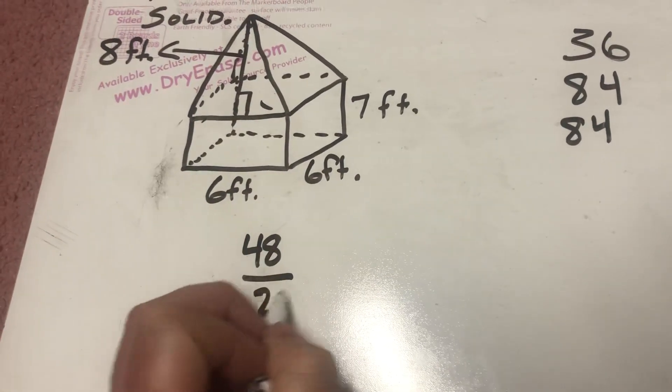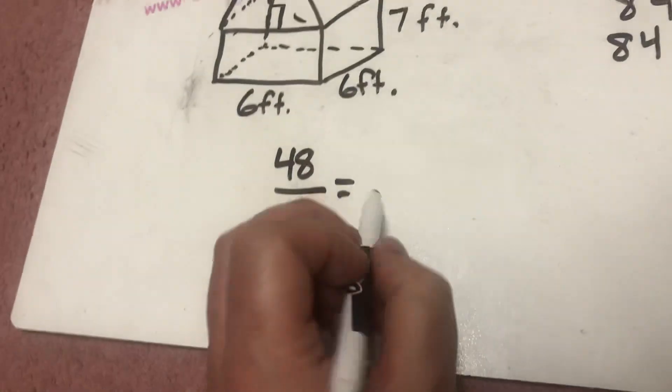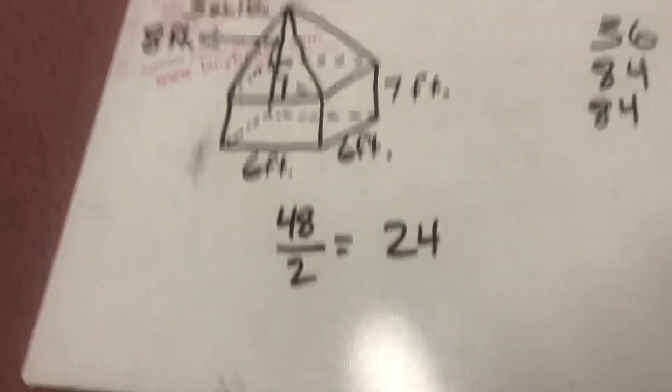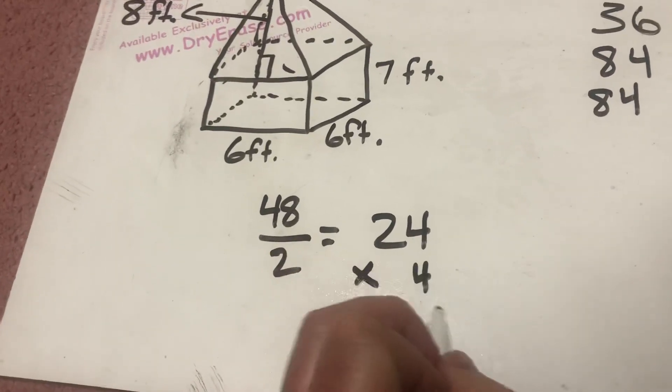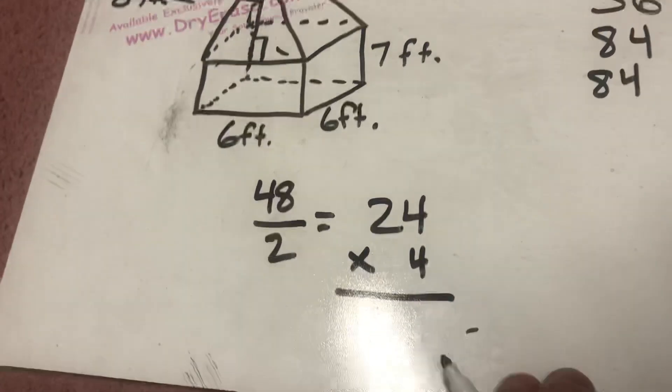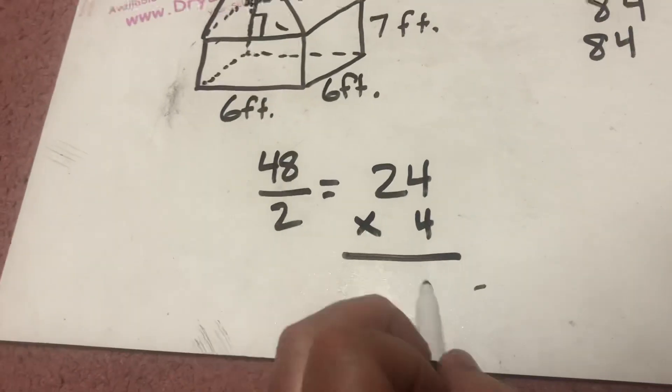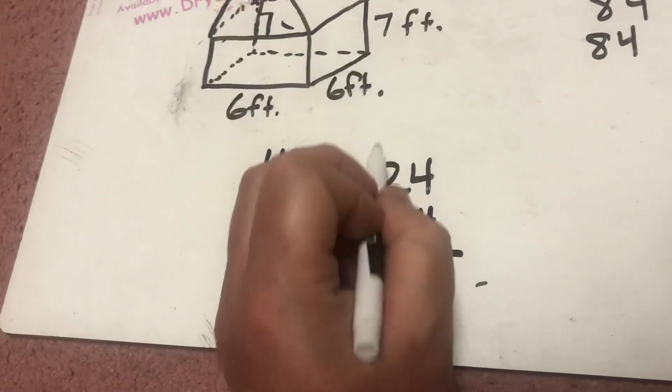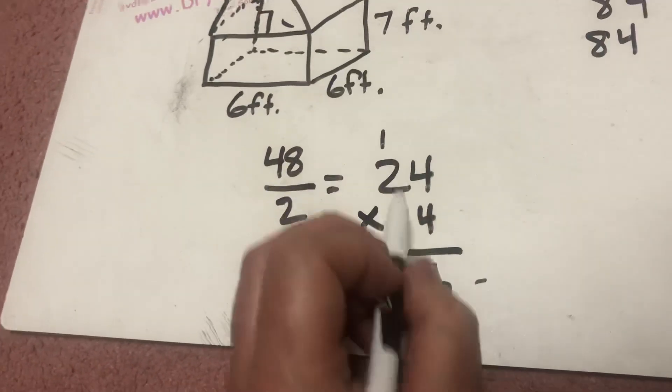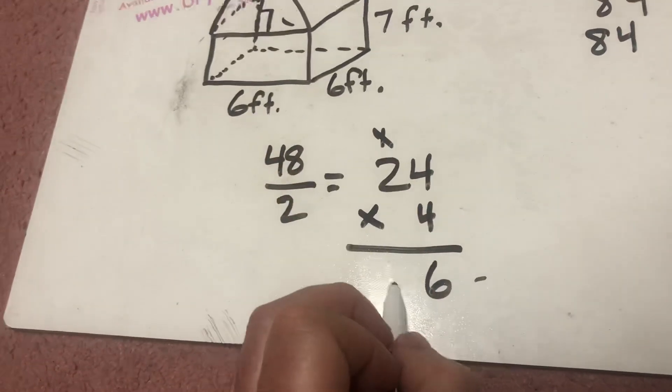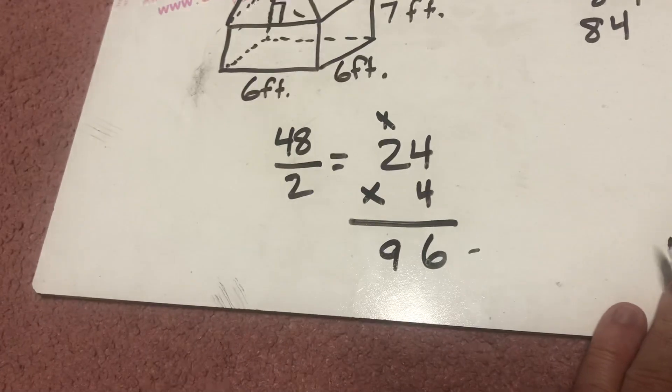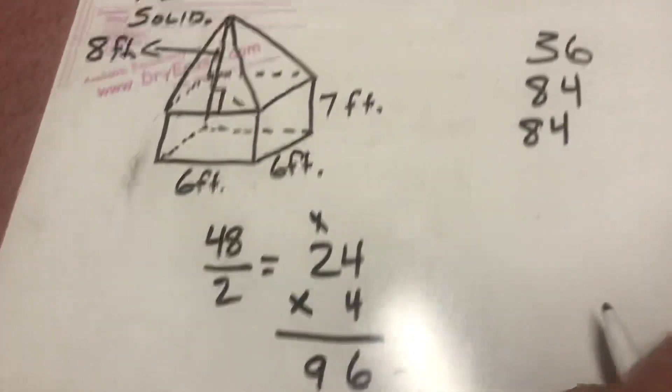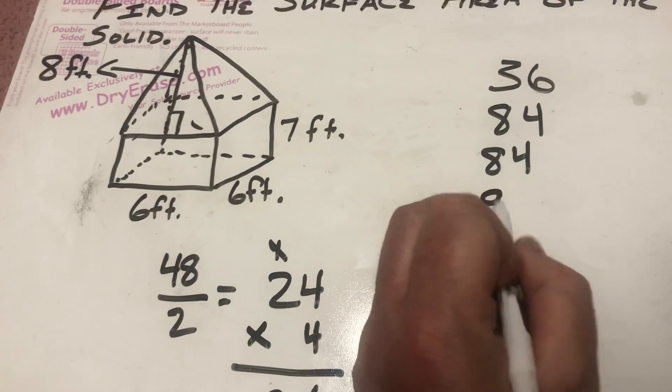I'm going to divide that by 2. Well, I know that 48 divided by 2 is 24, but I have 4 triangular faces that have an area of 24 square feet. So, I'm going to multiply that by 4. 4 times 4 is 16. Put the 6 down and carry the 1. 4 times 2 is 8, plus 1 is 9. I get 96 square feet total on the 4 triangular faces.